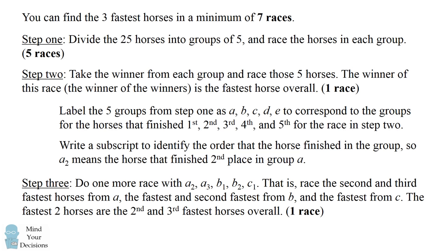That is, race the second and third fastest horses from group A, the fastest and second fastest horses from group B, and the fastest horse from group C. The top two finishers in this race will be the second and third fastest horses overall.